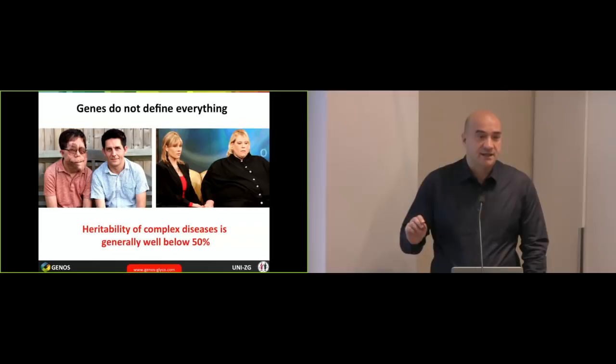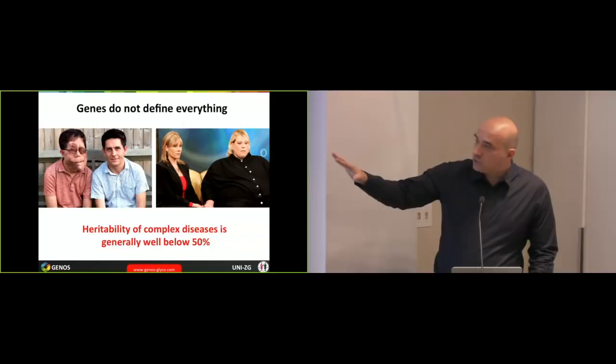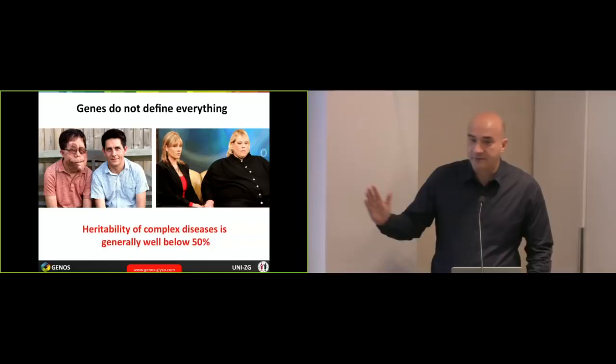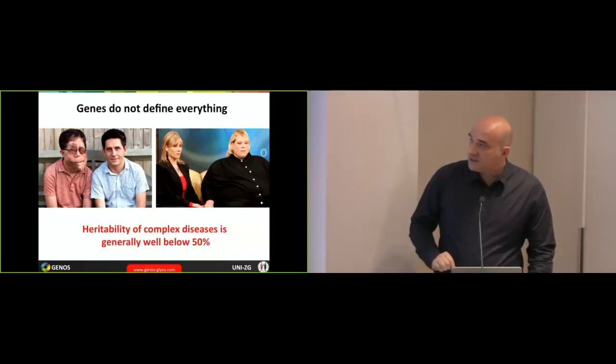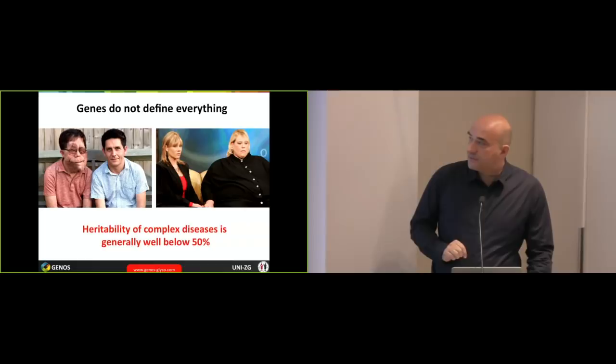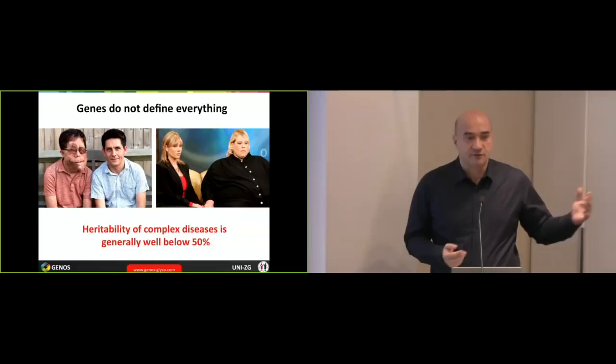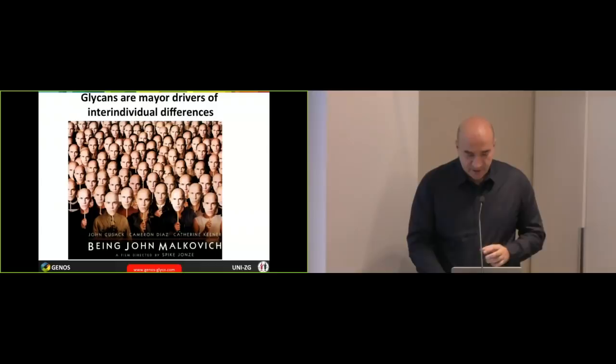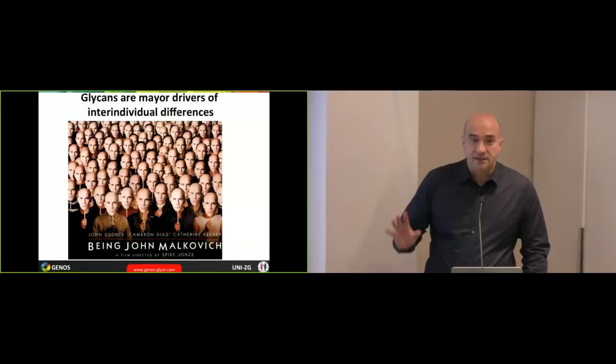And the other important aspect is that genes do not define everything. And the best example for that are identical twins, because identical twins generally do not get the same complex diseases. Usually the heritability of complex diseases is way below 50, even sometimes below 30%. So these two pairs of twins, despite having exactly the same genome for their entire life, have obviously very different life outcomes. On the left-hand side, apparently some kind of bizarre epigenetic changes changed the genomes of these two twins. One of them developed multiple tumors, the other one did not. On the right-hand side, two twins, which were obviously different because of their lifestyle. So the fact that we share the same genes does not make us the same.